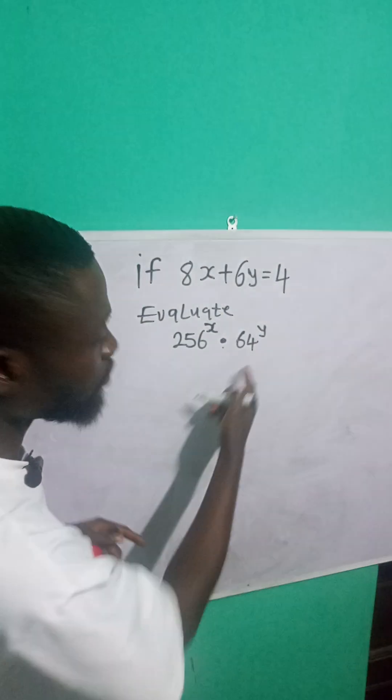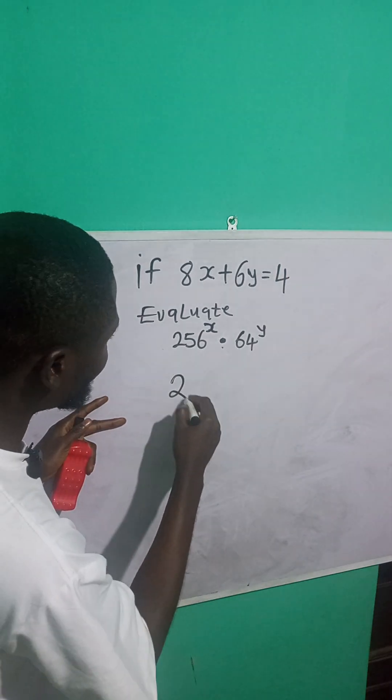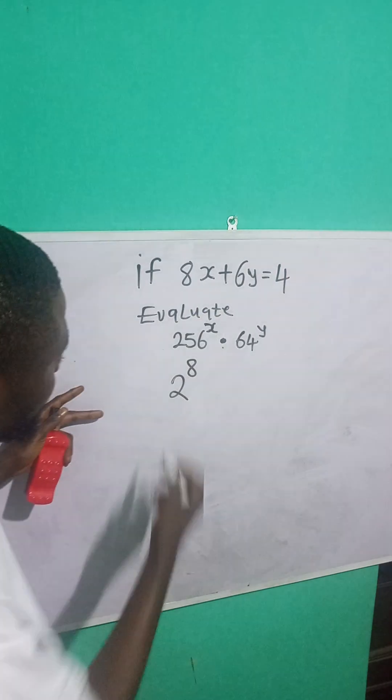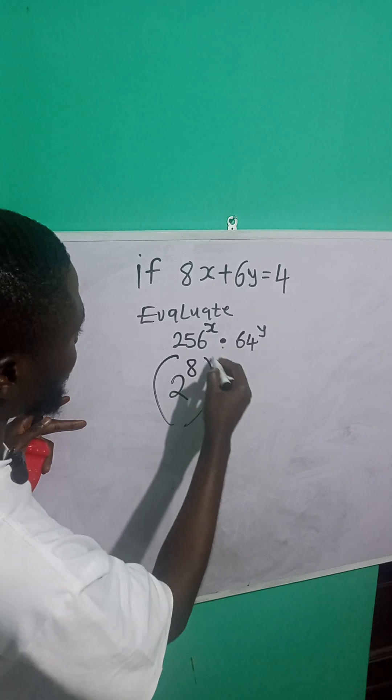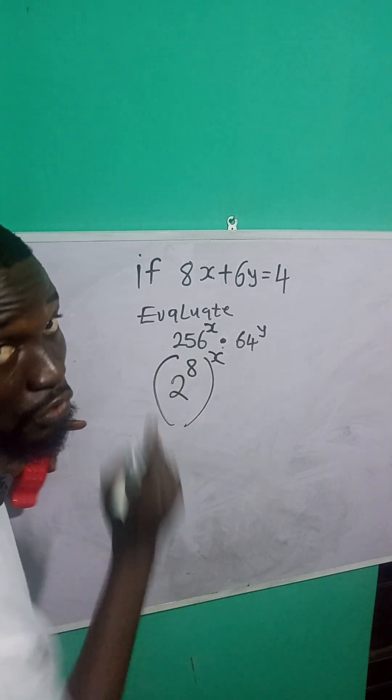Do you know that there is a relationship between these two numbers? 256 is the same as 2 raised to power 8, right? All raised to power of what? This x. 2 raised to power 8 will give you 256.